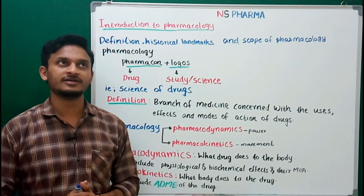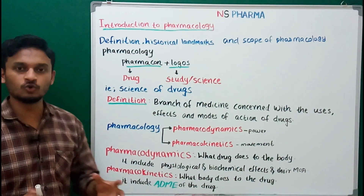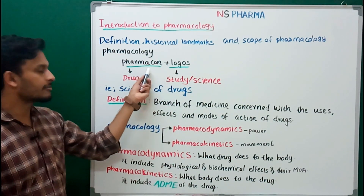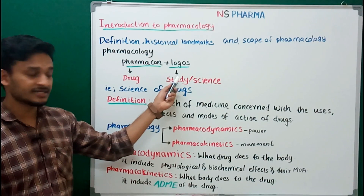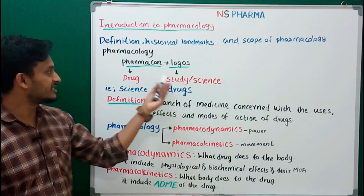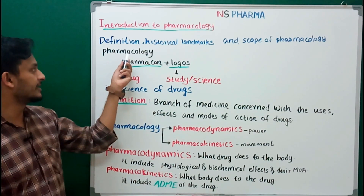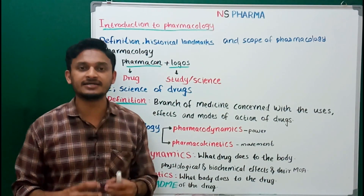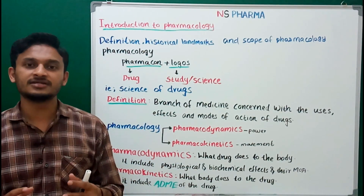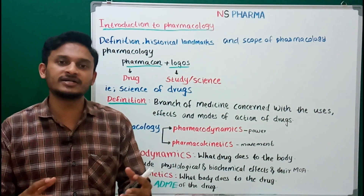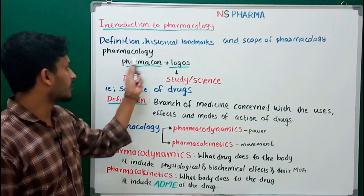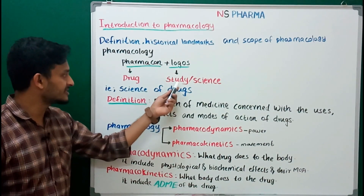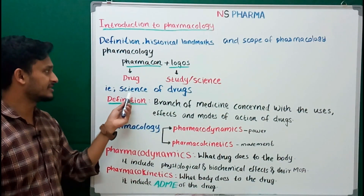The definition of pharmacology: the word pharmacology came from two words — pharmacone and logos. Pharmacone means drug, and logos means study or science. These two words combined to give the term pharmacology. So pharmacology is the study or science of drug.